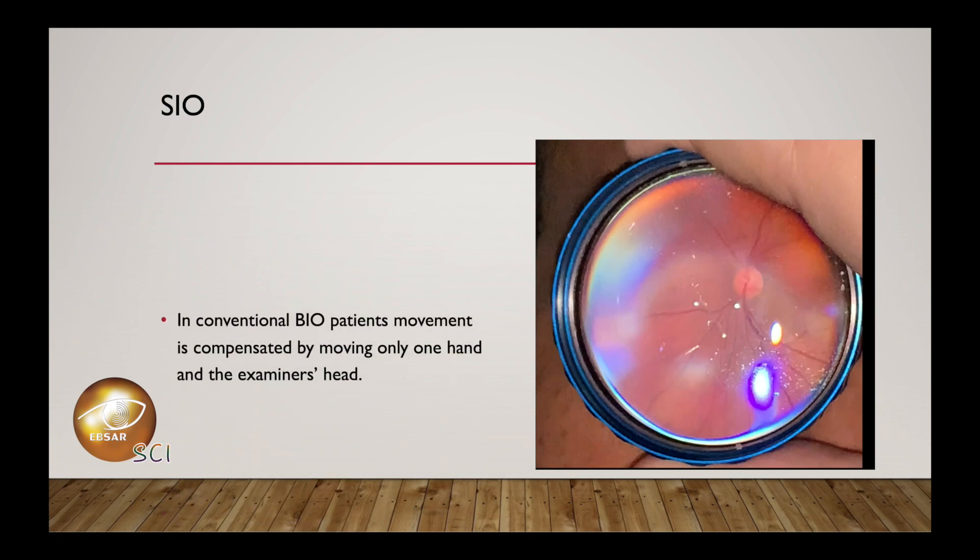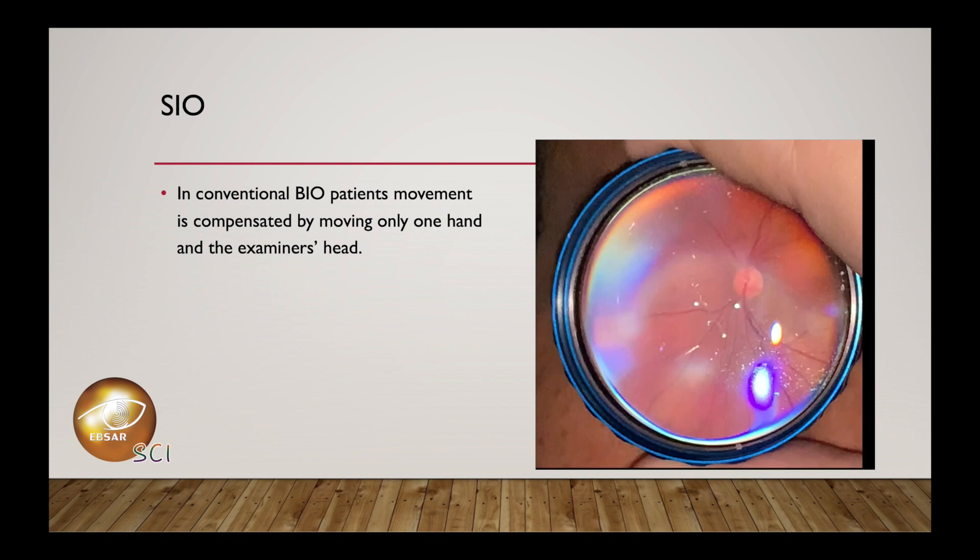In conventional binocular indirect ophthalmoscopy, the patient's movement is compensated by moving only one hand and the examiner's head. This is, in my viewpoint, the key maneuver difference between binocular indirect ophthalmoscopy and smartphone indirect ophthalmoscopy: two hands versus one hand.